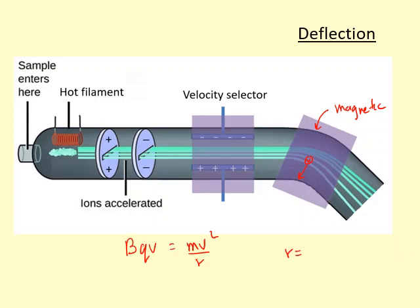r equals mv over Bq. So using the radius of curvature, this lets us figure out the radius of curvature because it's going to hit the detector and we can figure out r. So if we can figure out r, we know what B is, the magnetic flux density used over here, which is actually going to be different from the one used over here.